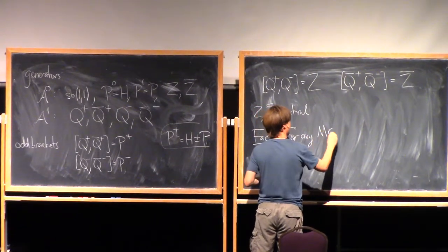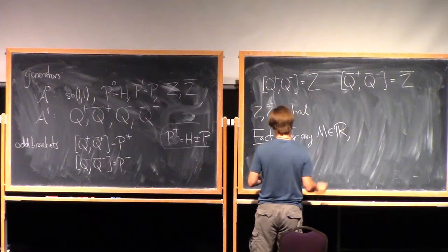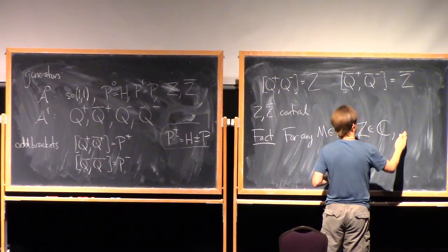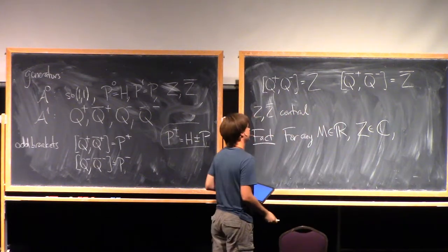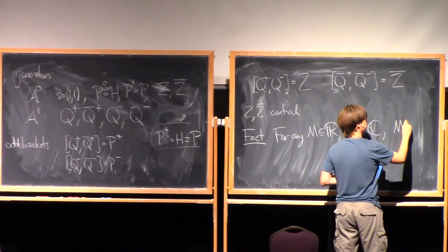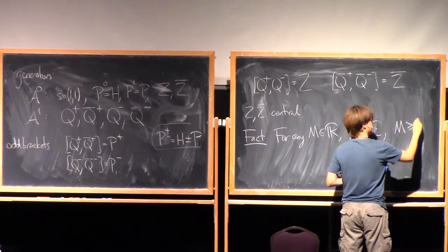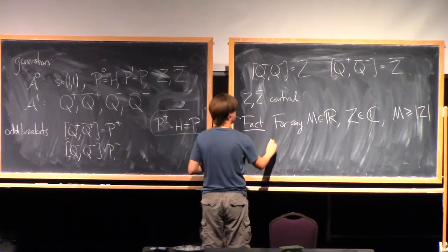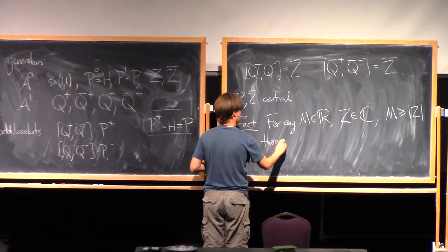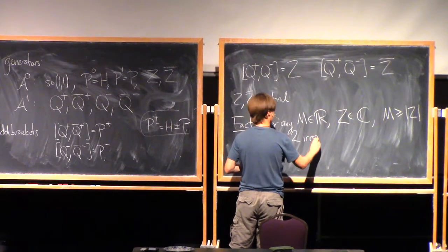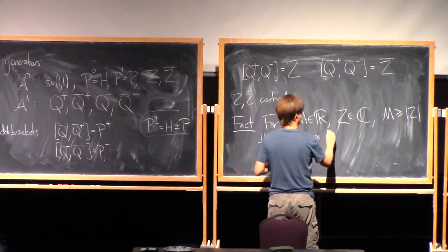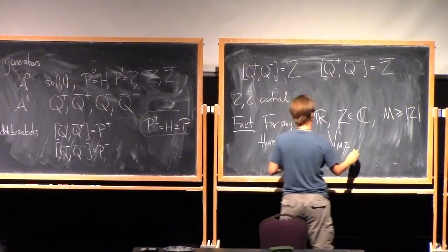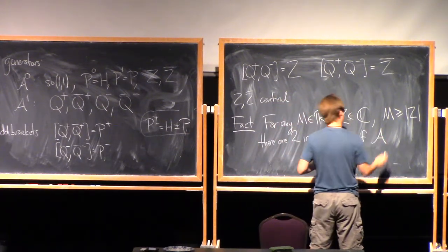For any M that's a real number and Z a complex number, obeying the inequality that the mass is greater than or equal to the absolute value of the central charge, there are going to be two irreducible representations V_{I, M, Z} labeled by i=A or i=B. So the data that I'm giving is M and Z.